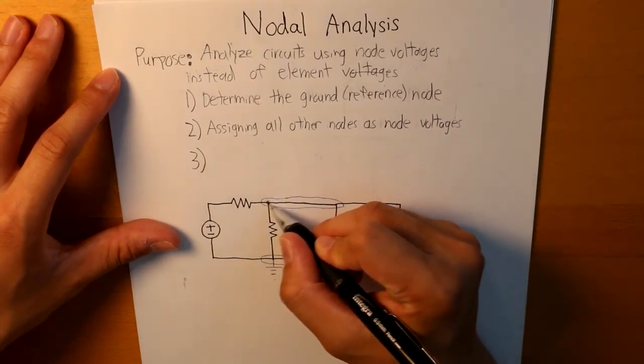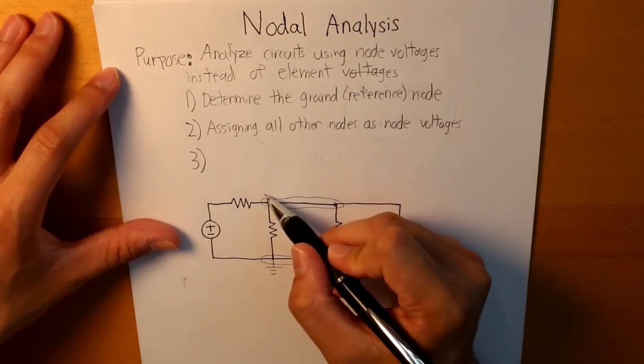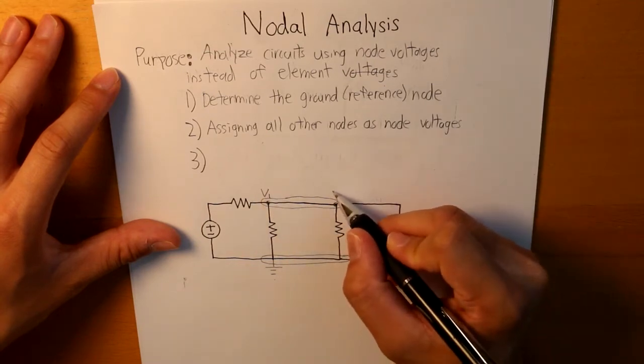And then for each intersection, we can indicate that as a voltage. So this would be, we can indicate that as V1. And this could be indicated as V2.